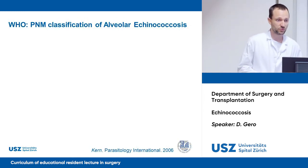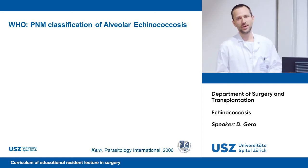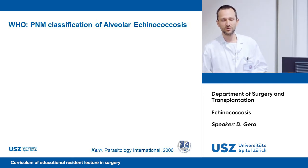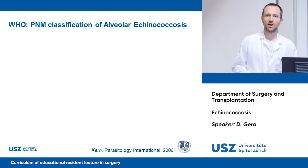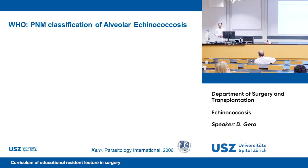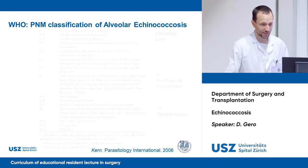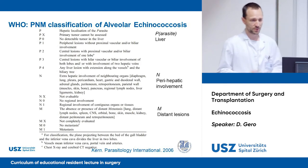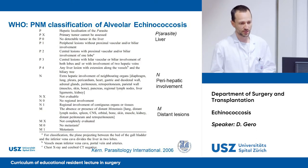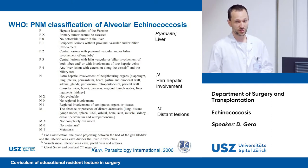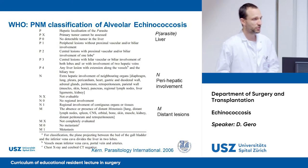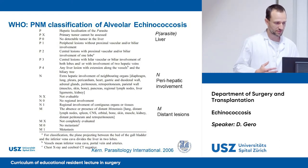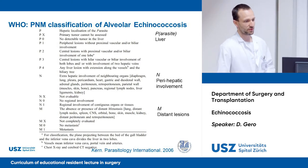My second question: what is the PNM classification of alveolar echinococcosis and what are common features with malignancy? P is for parasitic involvement, N for perihepatic involvement, and M for metastasis. Correct — analogous to TNM, P refers to local parasitic involvement in the liver, N is perihepatic involvement, and M represents distant lesions, which are quite rare. The common feature with malignancy is destruction of local tissues and invasion of other organs.